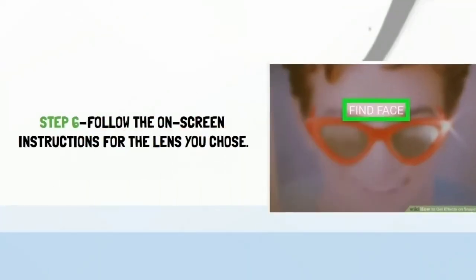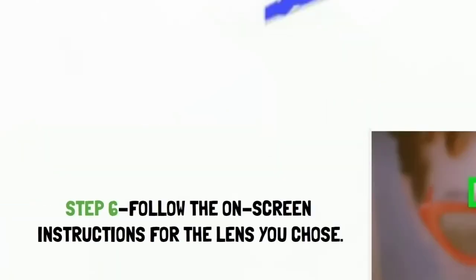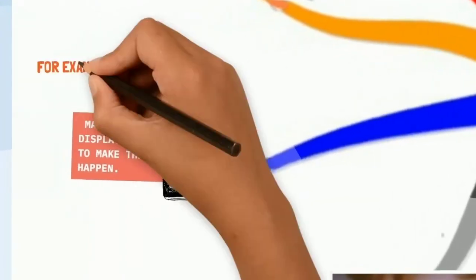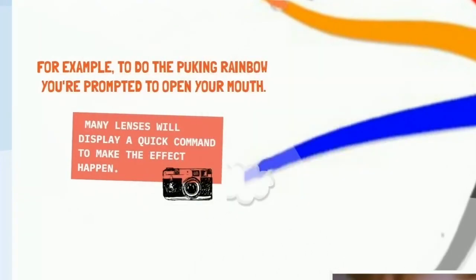Step 6: follow the on-screen instructions for the lens you chose. Many lenses will display a quick command to make the effect happen. For example, to do the puking rainbow you're prompted to open your mouth.